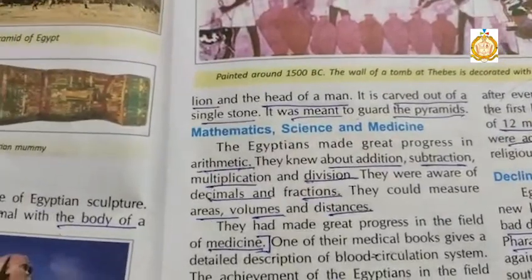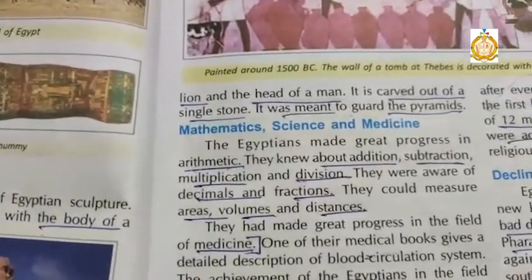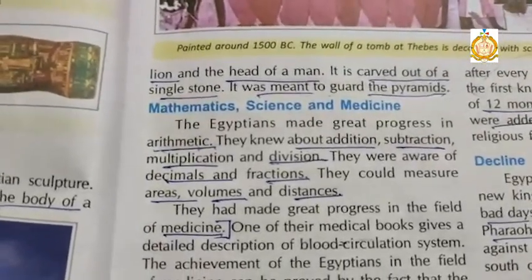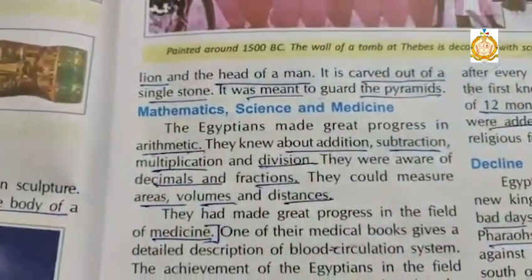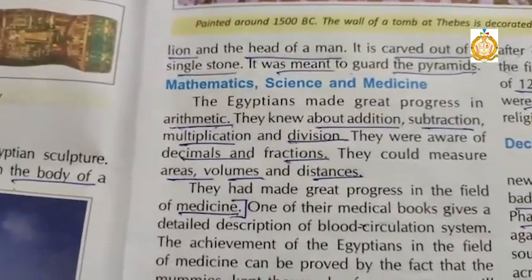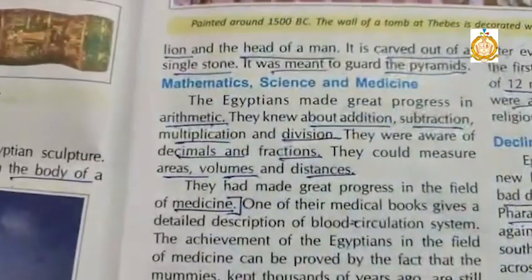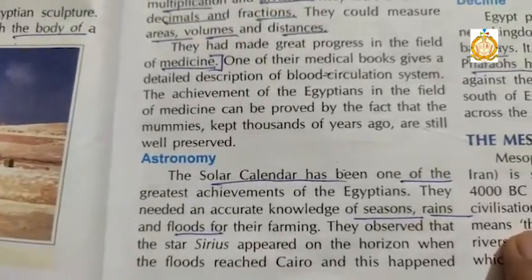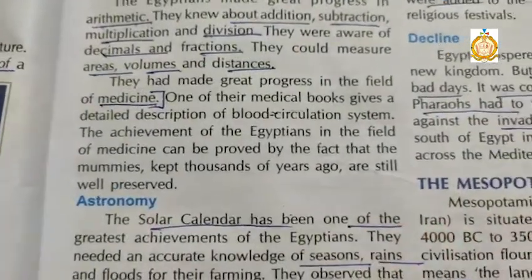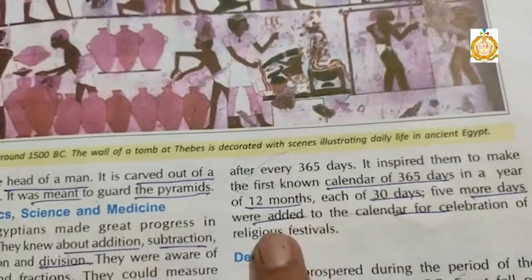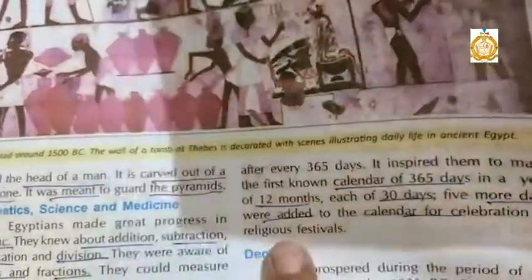The next contribution of the Egyptian civilization is in the field of mathematics, science and medicine. Egyptians made great progress in arithmetic — they knew about addition, subtraction, multiplication and division. They were also aware of decimal fractions and could measure areas, volumes and distances. They also made great progress in the field of medicine. In astronomy, a solar calendar was developed by the Egyptians. They had great knowledge about seasons, rains and floods, and developed a calendar of 365 days, with 12 months of 30 days each, and 5 extra days added to celebrate religious festivals.